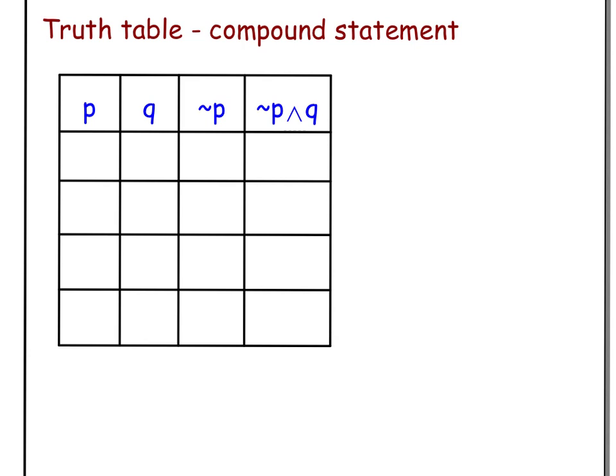We will fill in the truth values below P and Q in the standard way. So again, the first statement is always true, true, false, false. The second statement is always true, false, true, false.